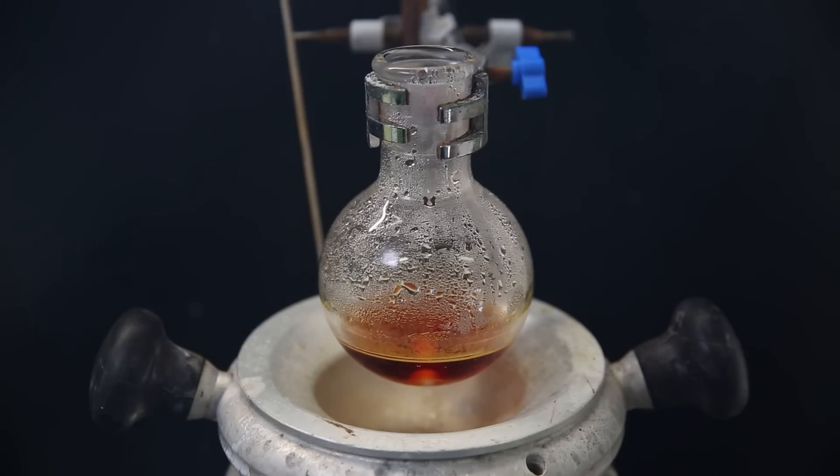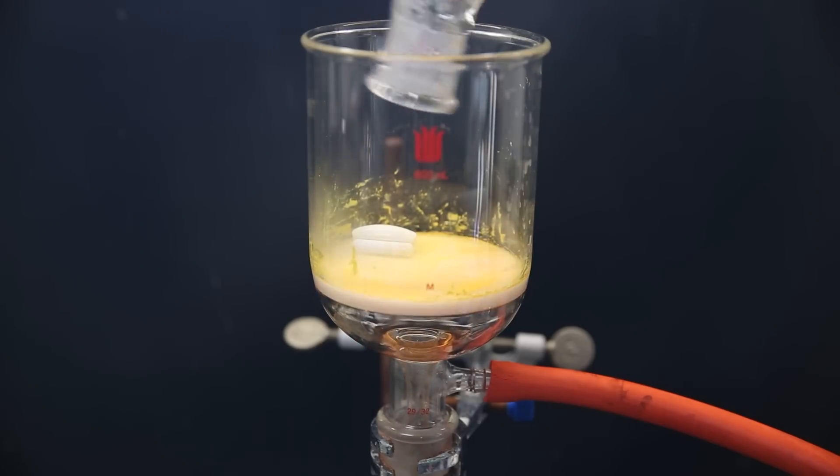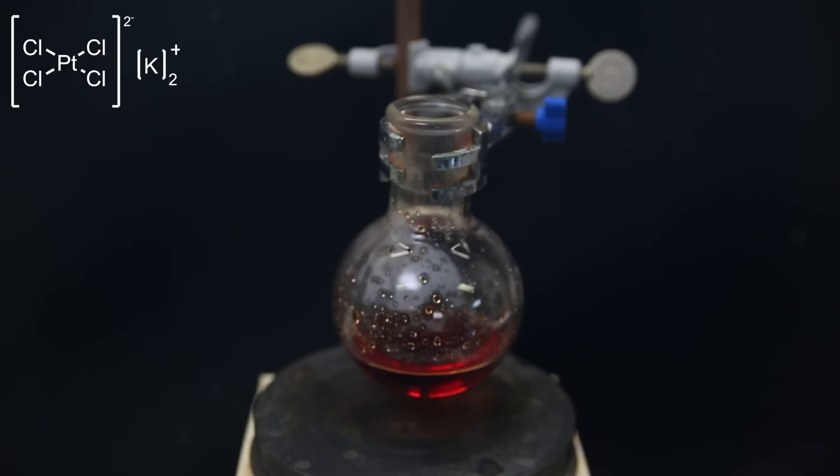When almost all of the solid is gone, I stop adding the sulfur dioxide, because if it is added in excess, it can form complexes, which is not desirable. I then filter it through the same filter that still contains some hexachloroplatinate from before. I wash it down with some water, and I am left with a red filtrate containing potassium tetrachloroplatinate.